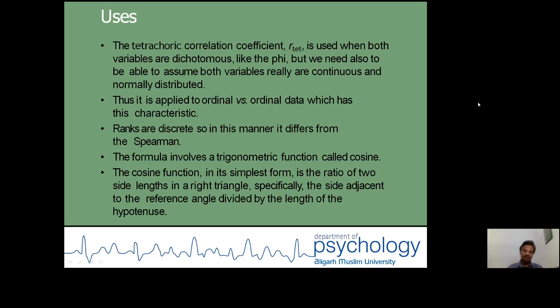The formula involves a trigonometric function called cosine. The cosine function in its simplest form is the ratio of two side lengths in a right triangle, especially the side adjacent to the reference angle divided by the length of the hypotenuse.